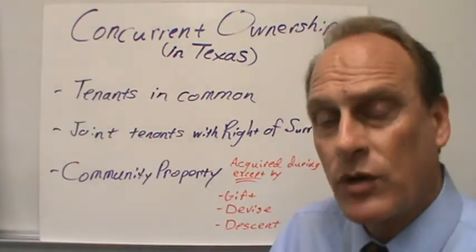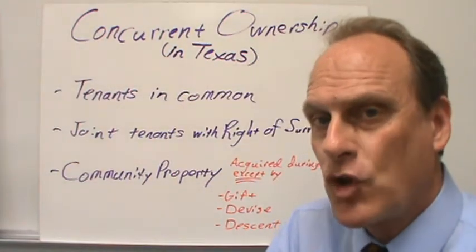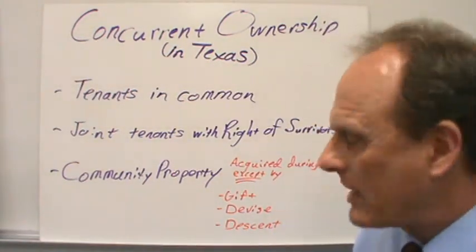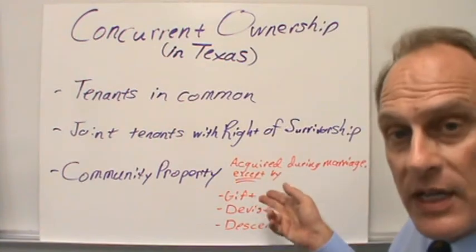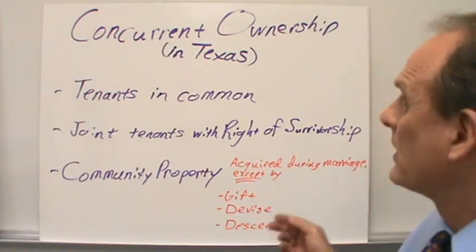So community property is that property acquired during marriage except by gift, devise, or descent.